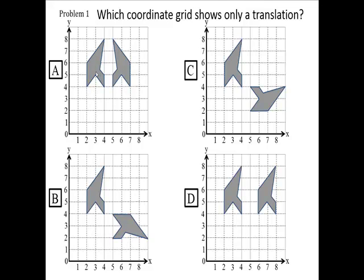Which coordinate grid shows only a translation? Okay, we have four choices: A, B, C, and D. Four different grids, and we have four different examples here. See how the left figure is the same on all four of them? The left figure looks the same on all four of these, but the right figure looks different, doesn't it?